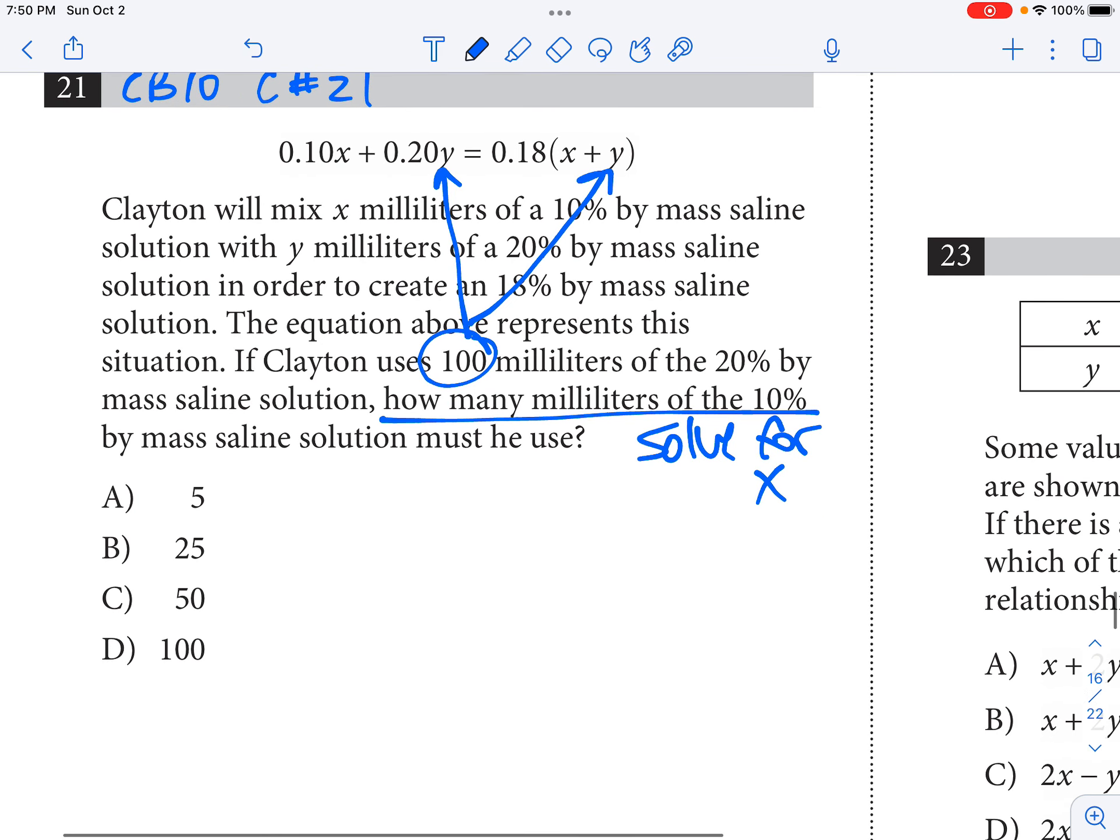Okay, so I'm going to show my work down here. I've got 0.1X. 10% is the same as 0.1X. So I can kind of simplify this equation just a little bit. But plus 0.2Y equals, oh wait, Y was 100, remember? Equals 0.18X plus 100.